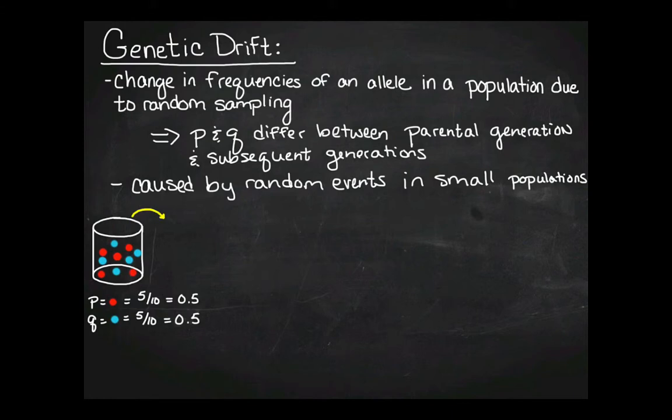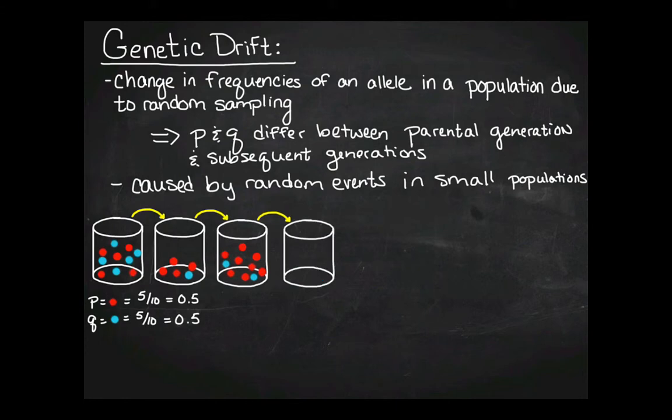And let's say I randomly choose beads out and I choose 5 random beads. Well, the 5 random beads that I chose were 4 red and 1 blue. And so if I go ahead and just double those numbers, then what I would get is I would get 8 red and 2 blue. You can see that my frequencies of my red and my blue alleles are different there. So let's go another generation. And I'm just going to select 5 red. Well, now my entire population is all red.